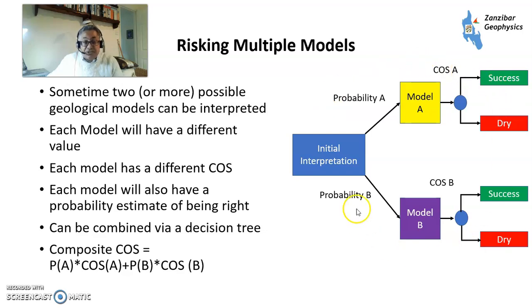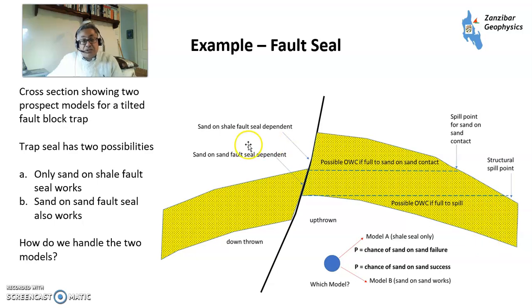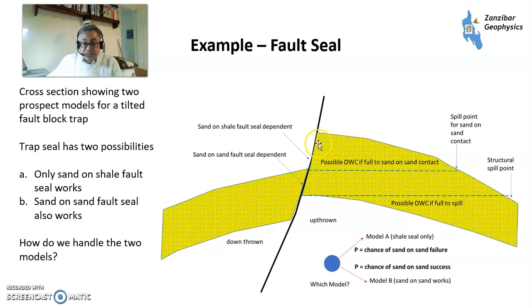You can combine these via a decision tree, which is a good way of illustrating what could be going on. An example here is a fault seal. You've got a fault — this is a cross section — you've got your sandstone reservoir, and you've got the sand on shale contact here. You've got a shale top seal. So you've got model A, which is this area in here.